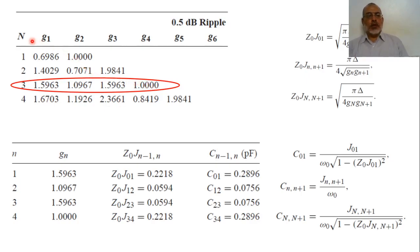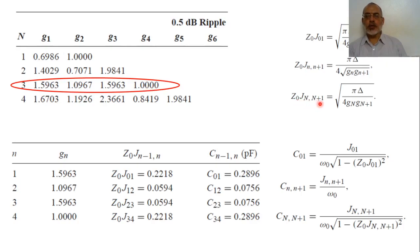Now we are going to design our filter using the table of 0.5 dB ripple. For the third order, the values of G1, G2, G3, G4 are given by the table. From the G values, we can determine the values of the admittance inverters. One relation is applied for the first inverter, another for the last (where N equals 3, so N+1 equals 4).